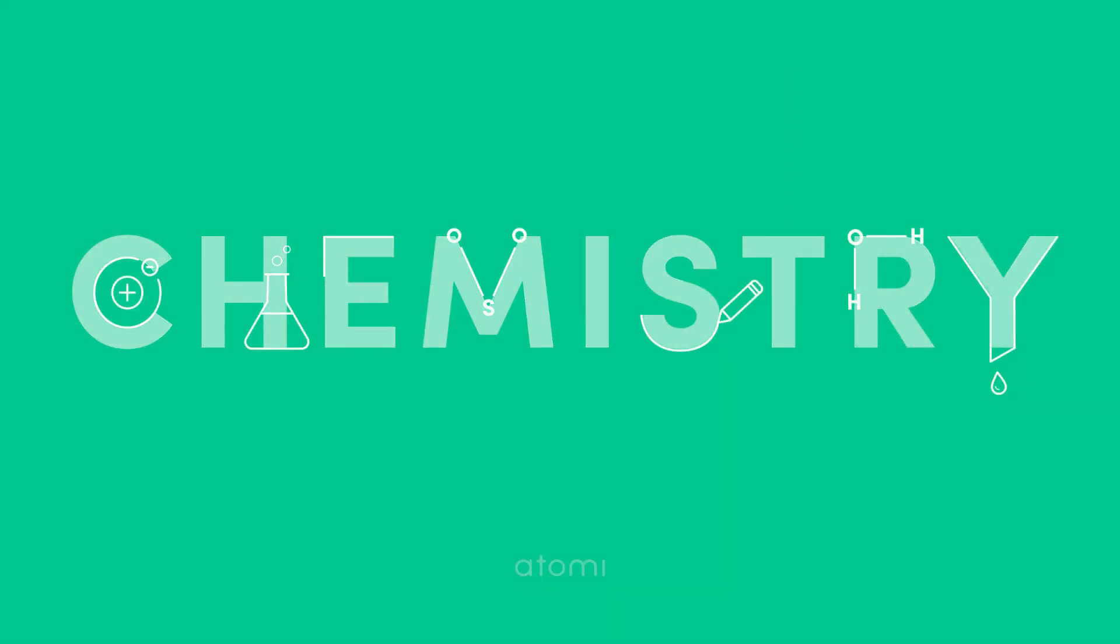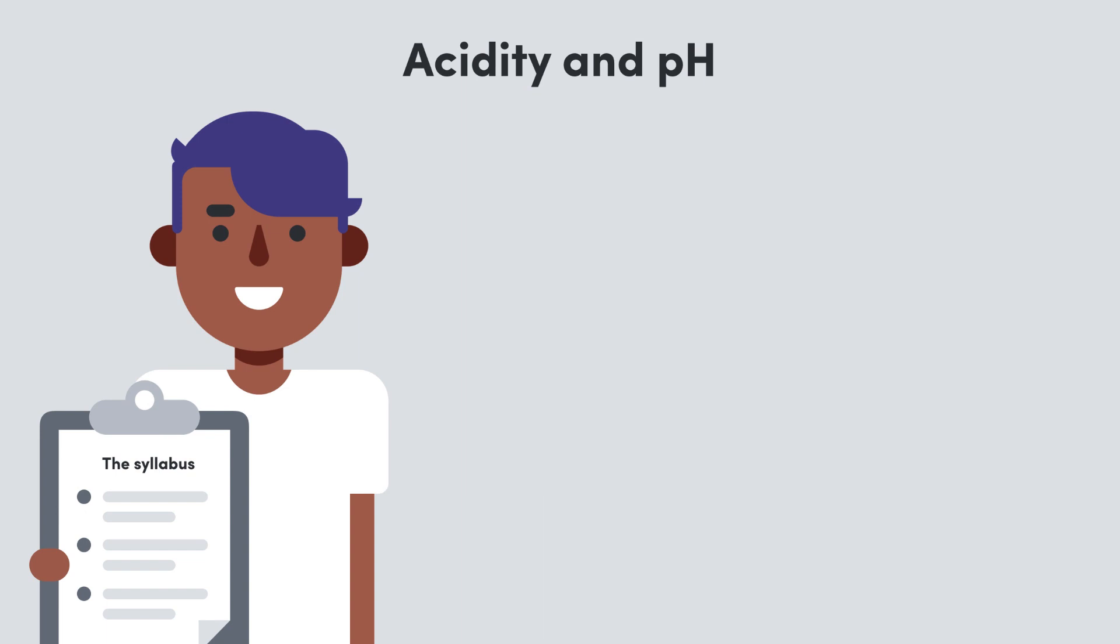Hey guys and welcome back to Atomy Chemistry. It's all well and good to have an understanding of what an acid is and the kinds of reactions they undergo, but like many things when it comes to exam time you've got to have the numbers to back it up. So in this video we're going to look at the number which describes acidity, known as pH, and we'll learn how to calculate it.